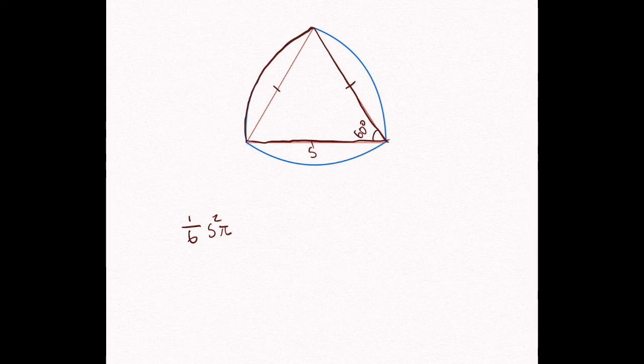However, we're clearly missing something. We need this part, this little curvy part, and this curvy part, right? How are we going to find that?